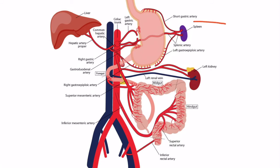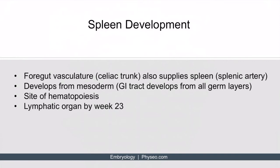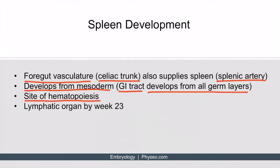Now let's talk about the embryology of the spleen. The spleen is not part of the GI tract; however, it fits well with this lecture because it receives its arterial supply from foregut vessels — specifically, it's supplied by the celiac trunk, which gives rise to the splenic artery. The spleen develops from mesoderm, whereas the GI tract itself develops from all the germ layers. During embryological development, the spleen is an important site for hematopoiesis, but it becomes a fully formed lymphatic organ by week 23.